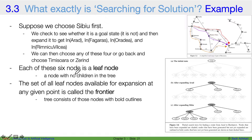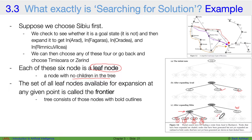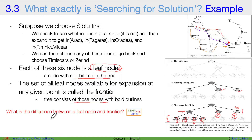Each of these six options is a leaf node — nodes with no children in the tree. In our current tree, after expanding Sibiu, these six nodes are leaf nodes. The set of all leaf nodes available for expansion at any given point is called the frontier. These six nodes are individually leaf nodes, but all put together into a single set they form the frontier. A leaf node is a part of the frontier; the frontier is the set of all leaf nodes.